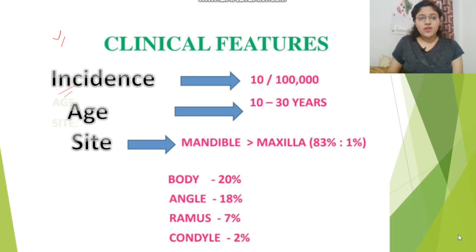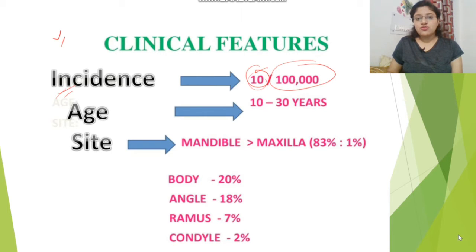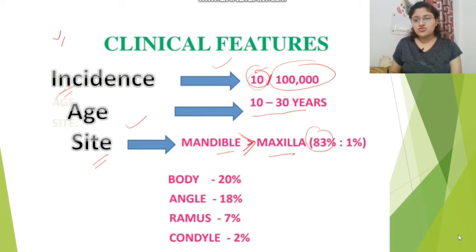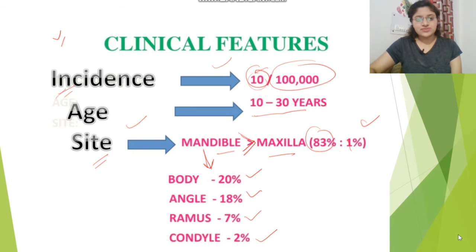Now the clinical features. Incidence: approximately 10 people per 100,000 may get osteomyelitis. Age: 10 to 30 years is the particularly affected range. Site: the mandible has the highest chances, with a ratio of 83 to 1. Specifically in the mandible: body of the mandible 20%, angle of the mandible 18%, ramus 7%, and condyle 2%.